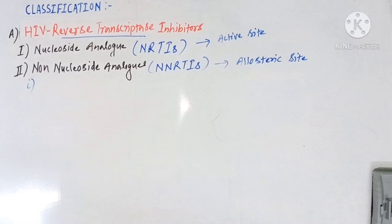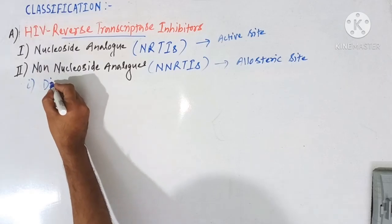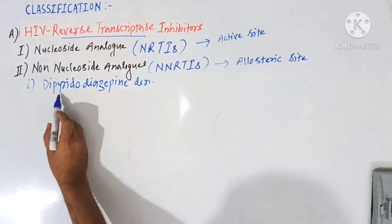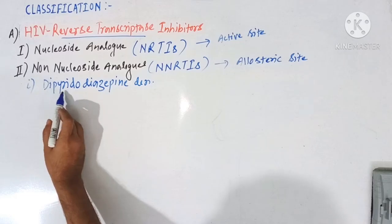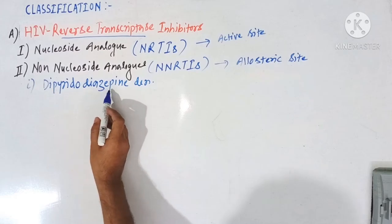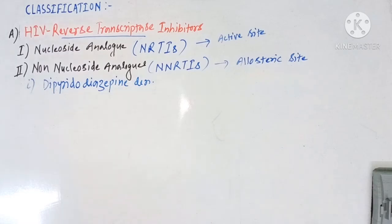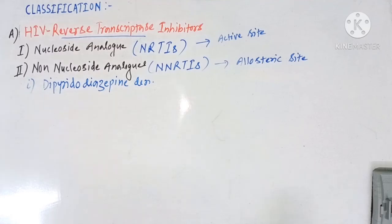The first subclass which comes under this class is the dipyrido-diazepine derivative. As the name indicates, dipyrido means two pyridine rings, and diazepine means a seven-membered ring with two nitrogen atoms. So first we will draw the basic skeleton of dipyrido-diazepine.